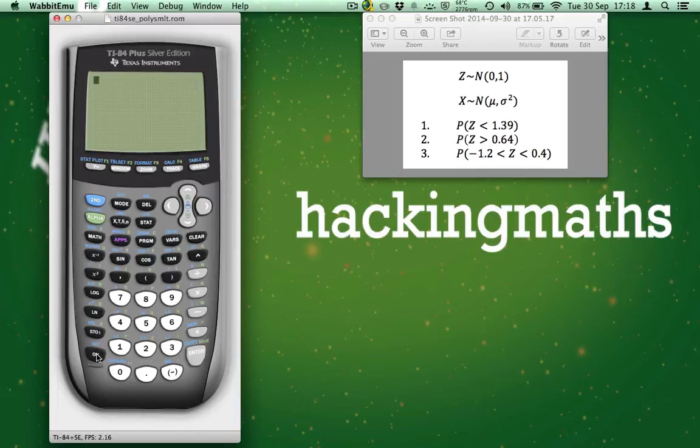The standard normal distribution is written as the variable z is normally distributed with a mean of 0 and a variance of 1. For a random variable that is a normal distribution, it is written like this. The variable x is normally distributed with a mean of mu and a variance of sigma squared. Remember that the variance is a standard deviation squared.